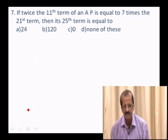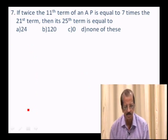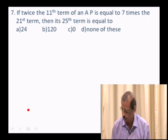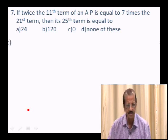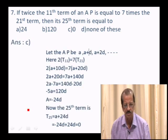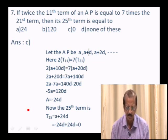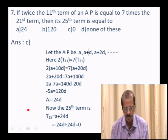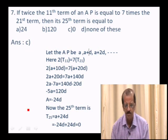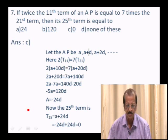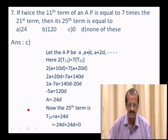Question 7: If twice the 11th term equals 7 times the 21st term of an AP, find the 25th term. Setting 2(A + 10D) = 7(A + 20D) gives A = −24D. Then T25 = A + 24D = −24D + 24D = 0. Answer: option C, 0.